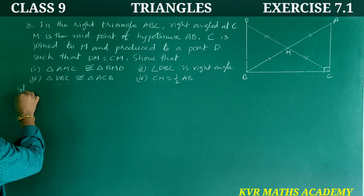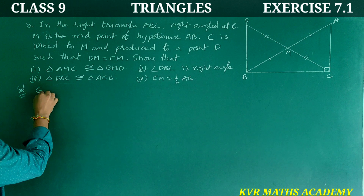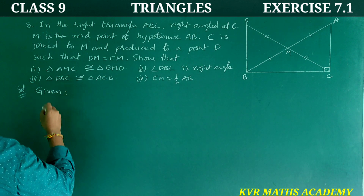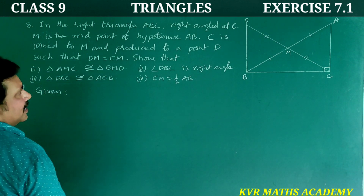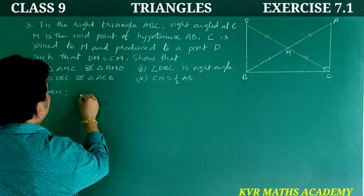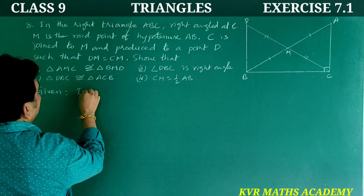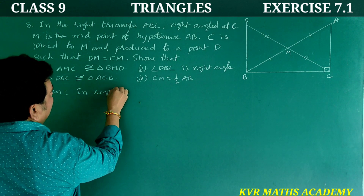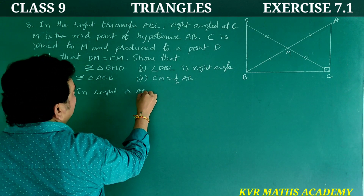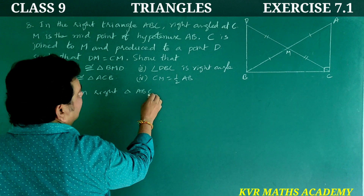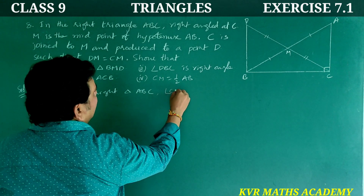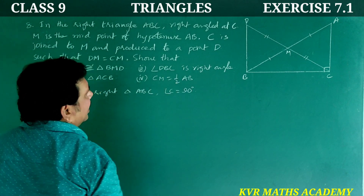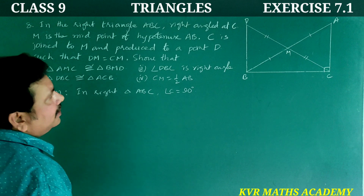Solution — what is given: In right triangle ABC, angle C is equal to 90 degrees. AM is equal to BM since M is the midpoint of AB.